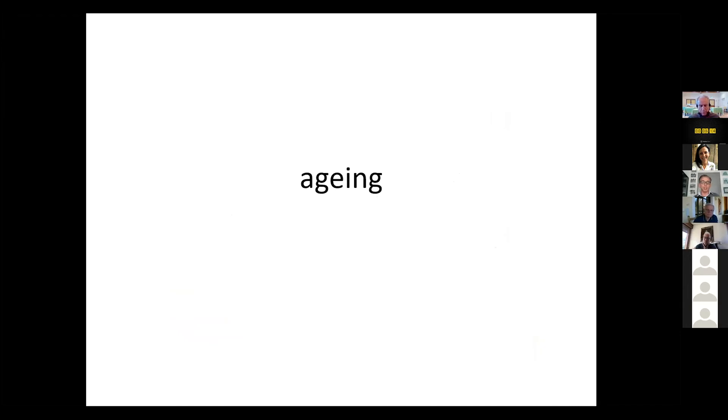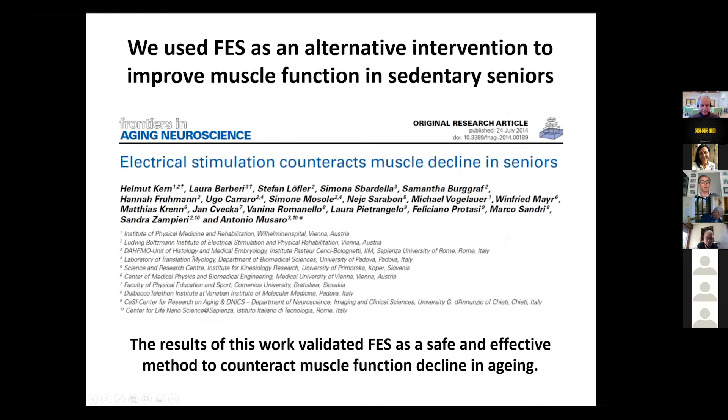What about aging? Well, yes, we did use functional electrical stimulation also in aging. This paper was published, I think it was 2014, first name Ansgar Muscare. But if you read all the names down here, you may recognize some of the main actors in all of this long time collaboration. Also, I forgot to mention Winfried that provided the stimulators and the people in Bratislava, Marco Sandri, Sandra Zampieri, Antonio and all of us. The results of this paper showed that electrical stimulation counteracted in an effective way muscle decline in seniors that could be invalidated, and somehow the use of FES as an effective and safe method to counteract the loss of muscle function and to improve muscle force in aging.